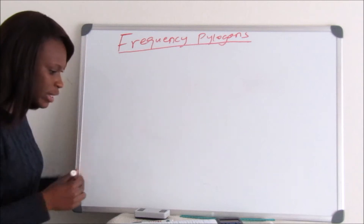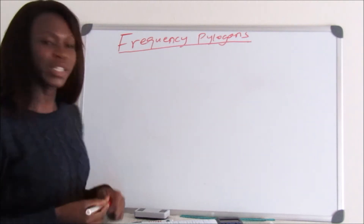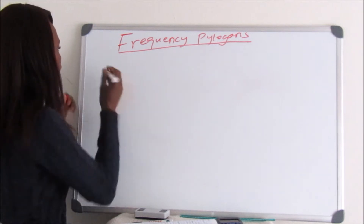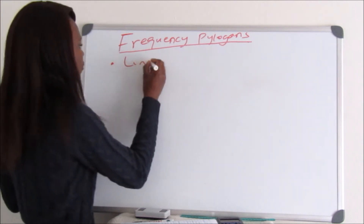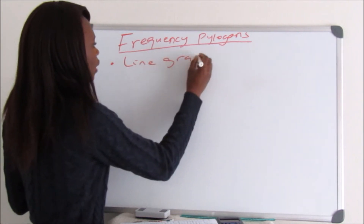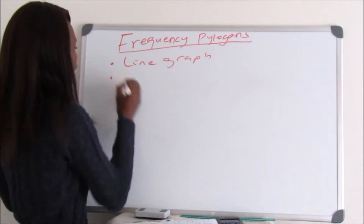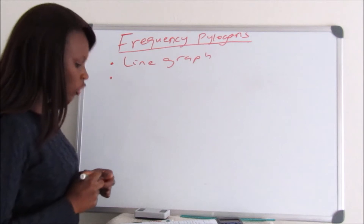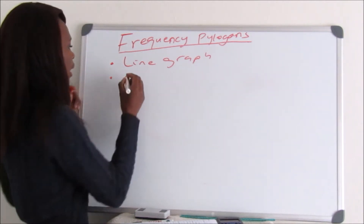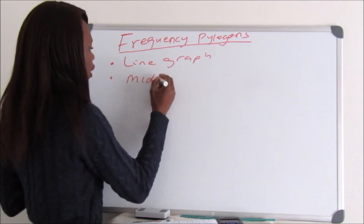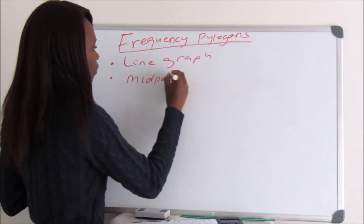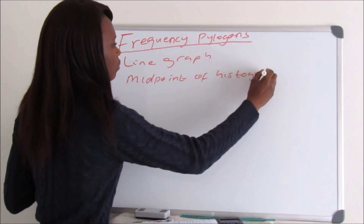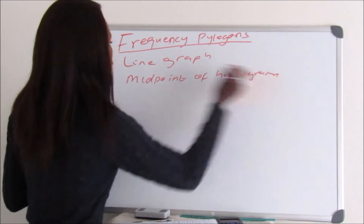A frequency polygon is constructed using a line graph by joining out the points. It's a line graph, constructed by joining the midpoint of the histogram with a straight line — the midpoint of the histogram.